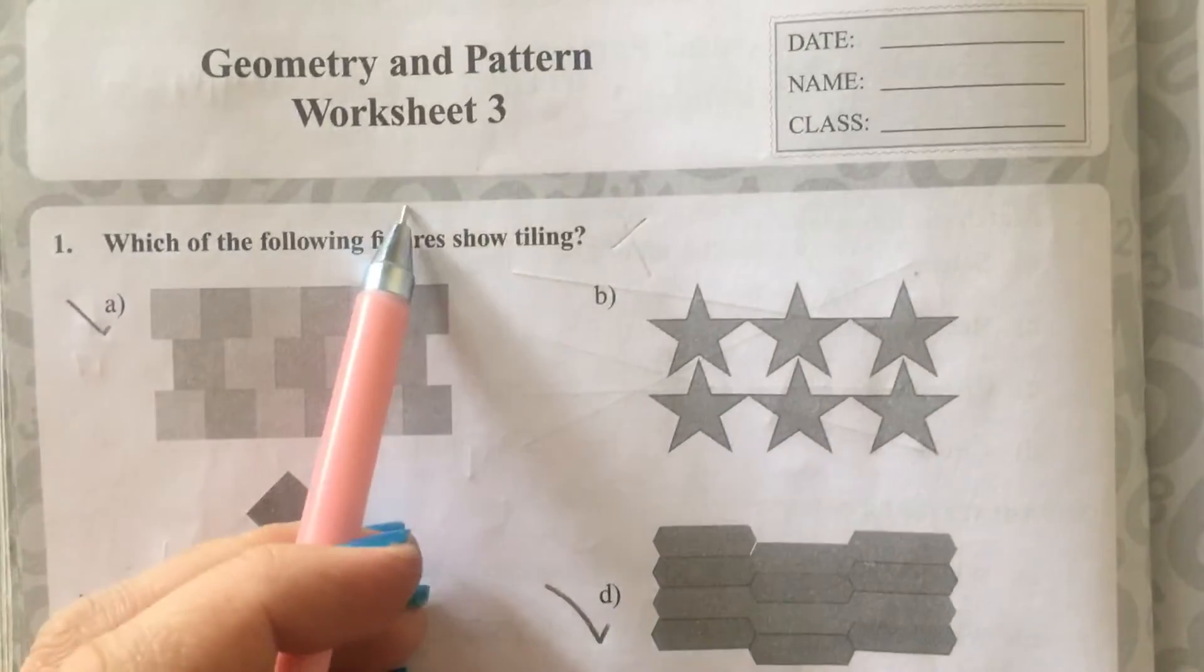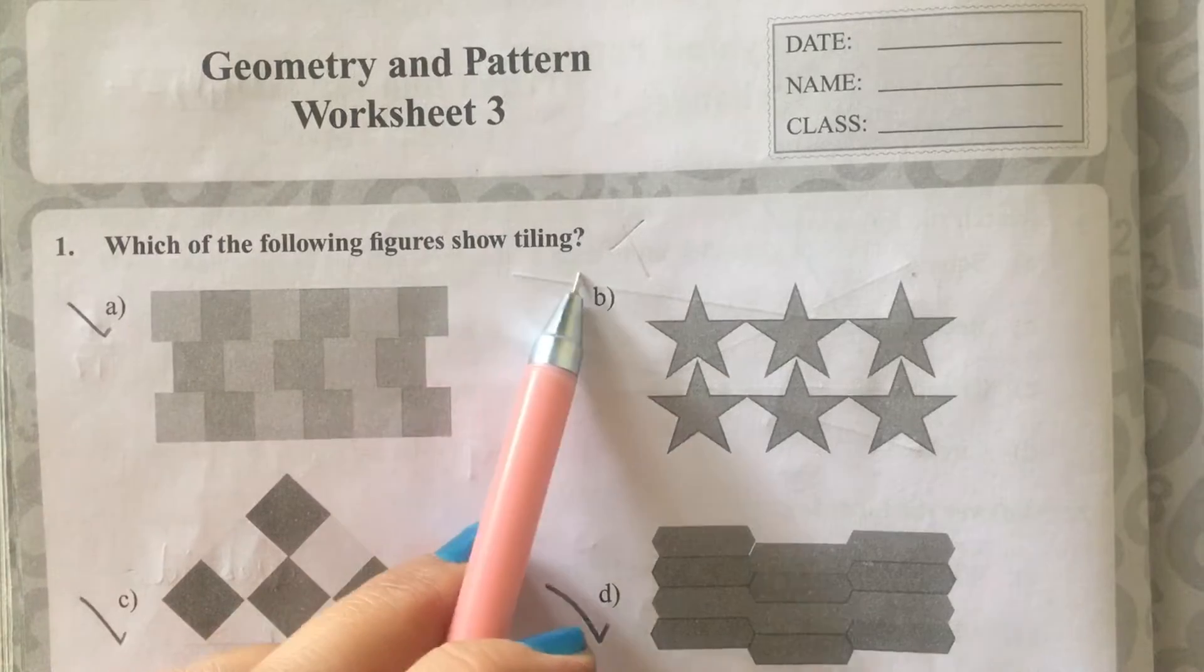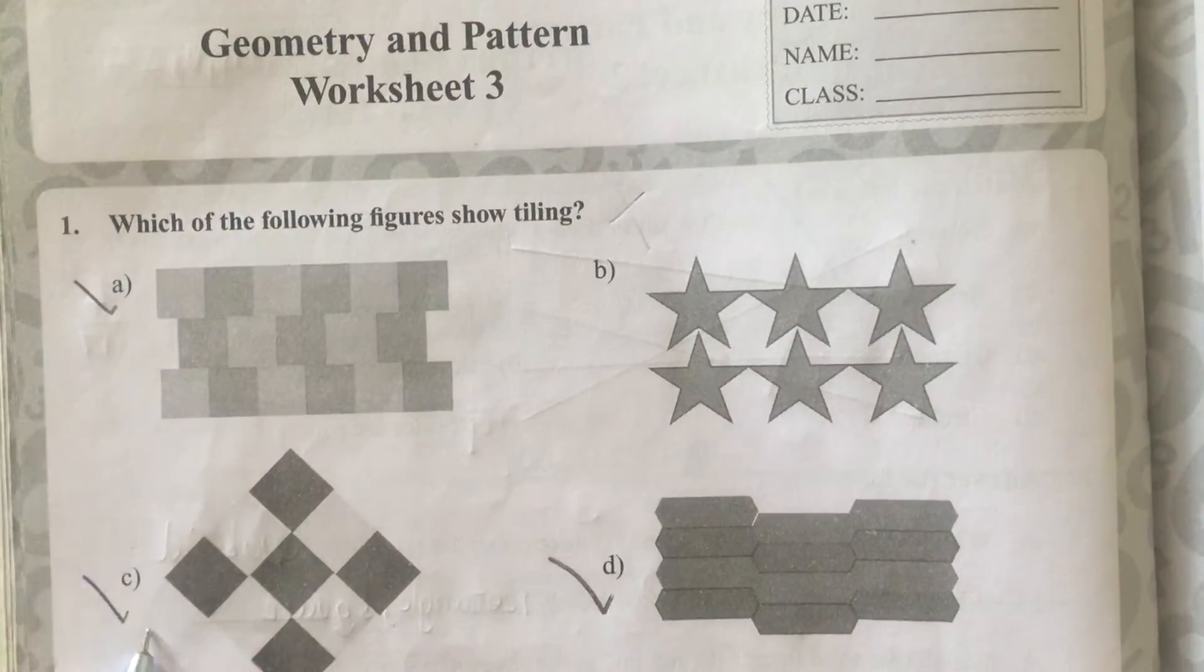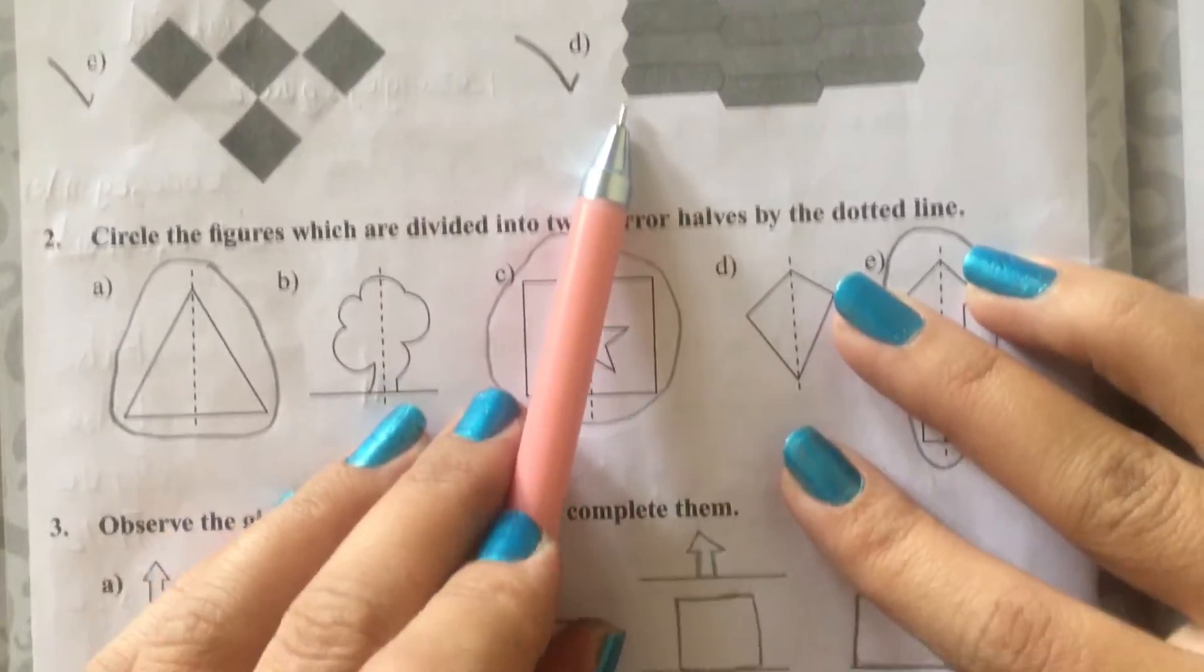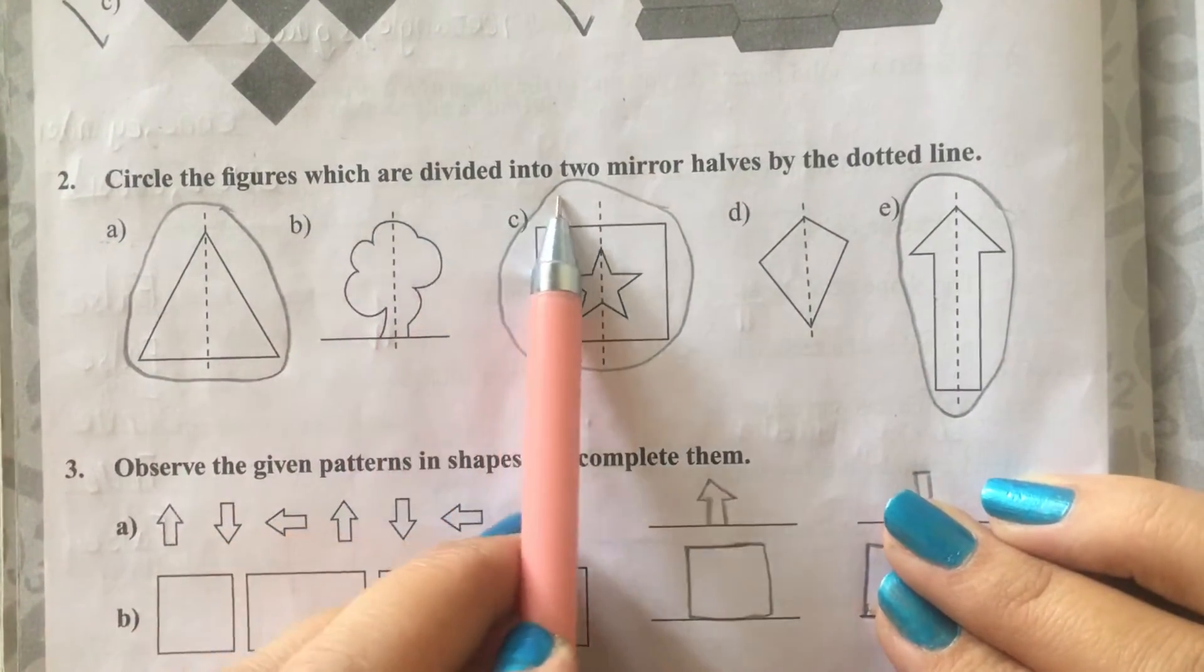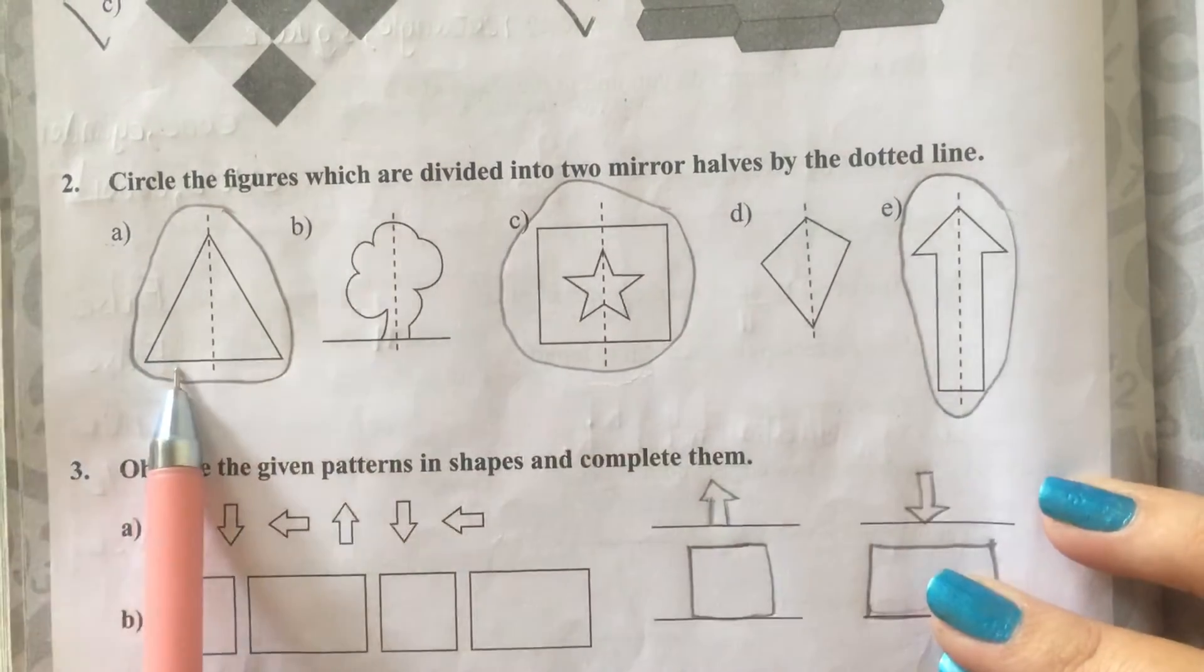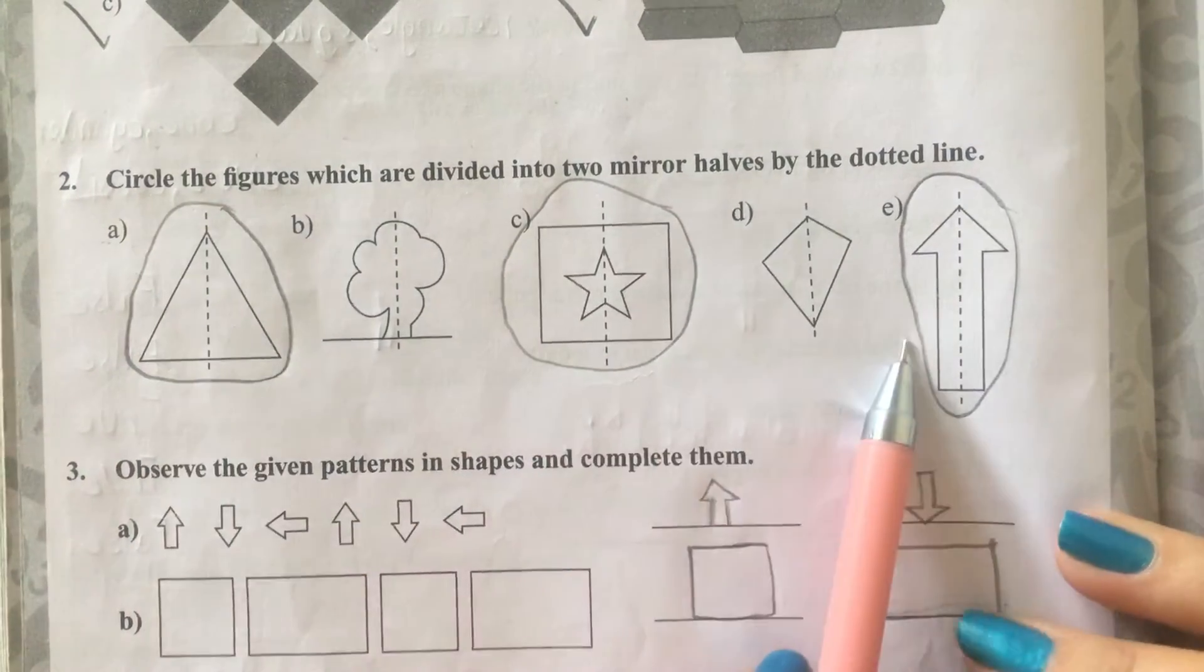Worksheet number 3. Which of the following figures show tiling? A, C and D. Number 2. Circle the figures which are divided into two mirror halves by the dotted line. The answer is A, C and E.